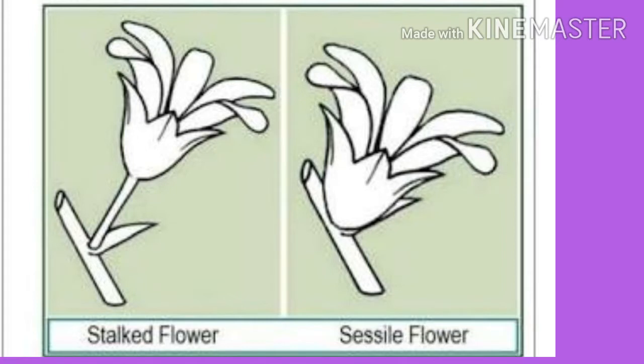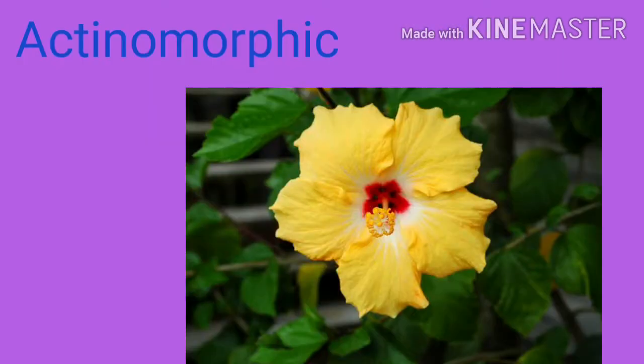If the flower has a stalk, also called a pedicel, it is described as a pedicellate flower. If it is without a stalk, then it is said to be sessile.